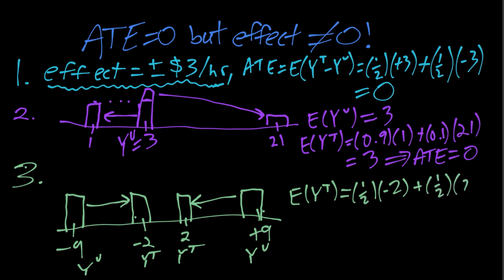So we'll get one-half times negative 2 plus one-half times positive 2 which is 0. And similarly for the untreated outcomes we just had negative 9 and positive 9, so that's also 0.